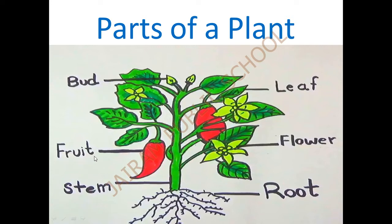Third one is stem. See the center portion - the center portion of a plant is called as the stem. S-T-E-M, stem. It is like the backbone. It is the center portion, and with the help of this stem only the plant gives branches, many fruits and leaves.